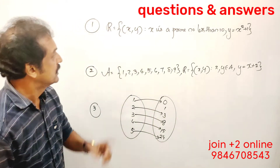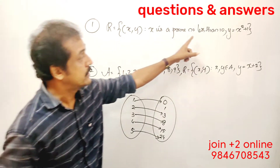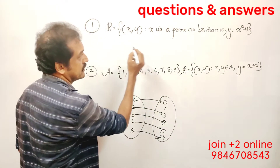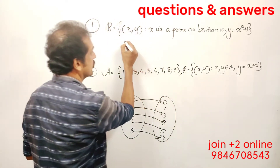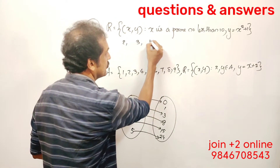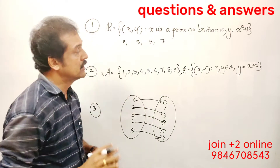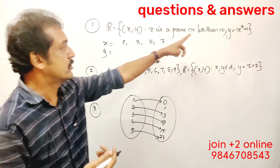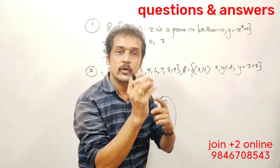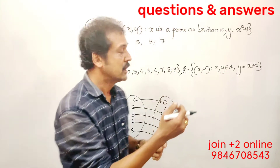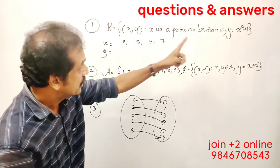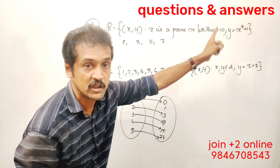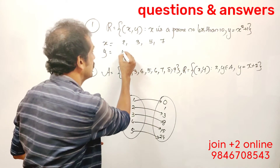You will learn: the relation is {(x, y) : x is a prime number less than 10 and y = x squared plus 1}. So x takes values 2, 3, 5, and 7. For x = 2: y = 2 squared plus 1 = 5.